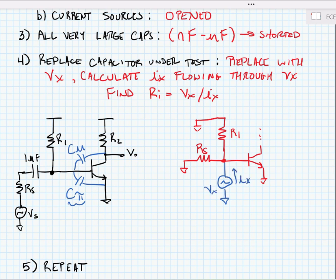Now in this case, we don't really need to worry about what's happening on the collector side of the amplifier because without the capacitor C mu, we don't see much impact from that side of the circuit.